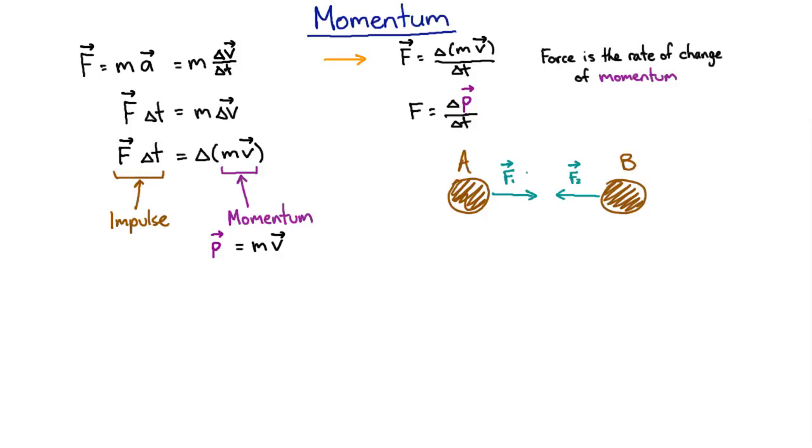So Newton's third law says that this force F1 is equal and opposite to F2, which means that in vector terms, if we add them up, they exactly cancel.